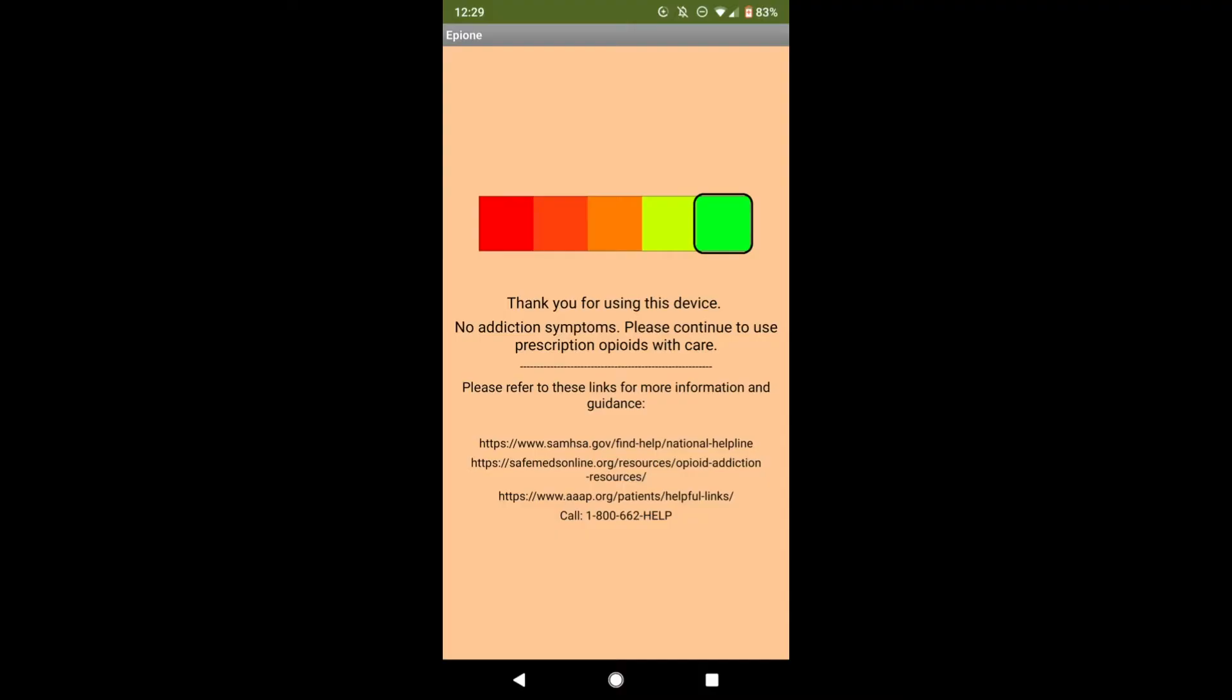The app then creates a range of values that correspond to a certain level of addiction and shows the results to the user on a user-friendly scale with action items they can take.